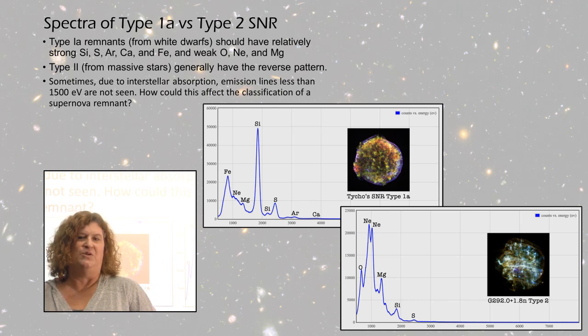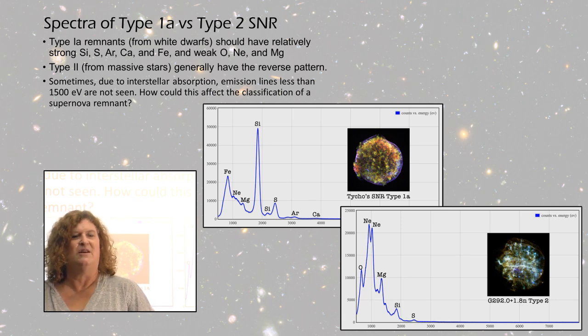And fairly weak oxygen, neon and magnesium. Then the Type 2 has the reverse pattern. The oxygen, neon, and magnesium have much stronger peaks on the Type 2.